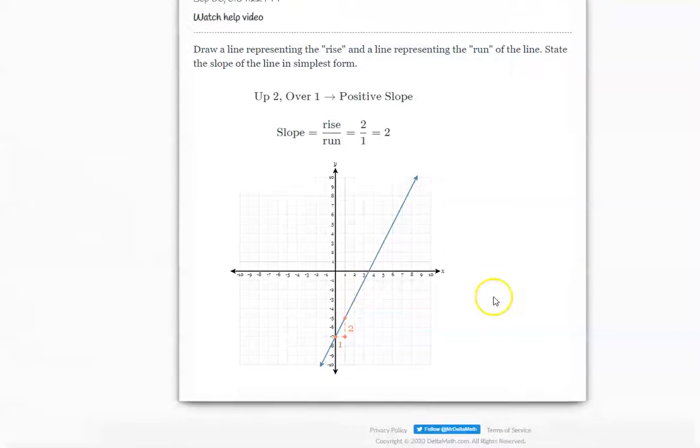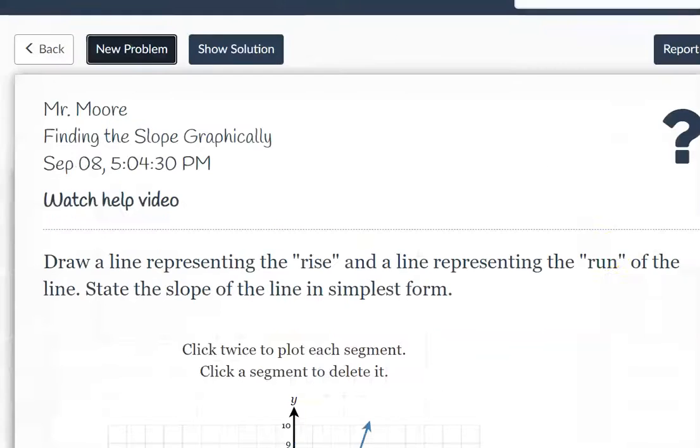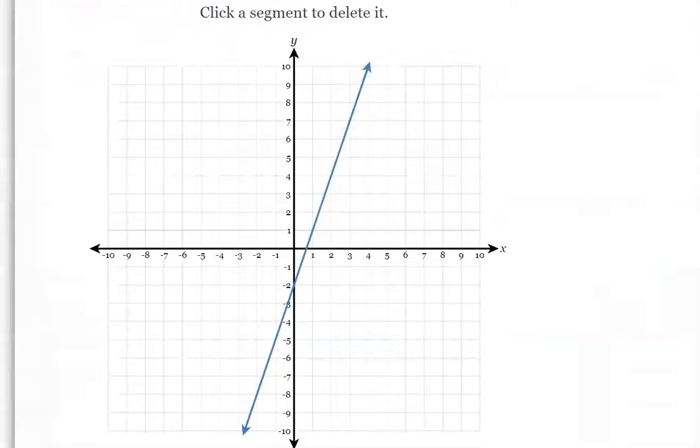So here we go, let's do a new problem. Show question, here we go. All right, in this case some of you also mentioned that you had trouble seeing it. Well guys, use the zoom right over here on the tab. So we want to draw a vertical line and horizontal line to represent rise and run.